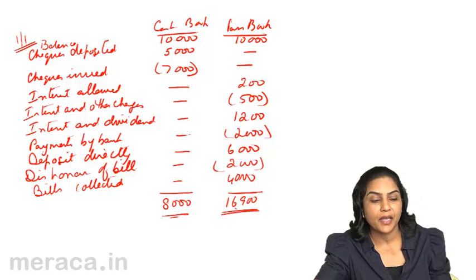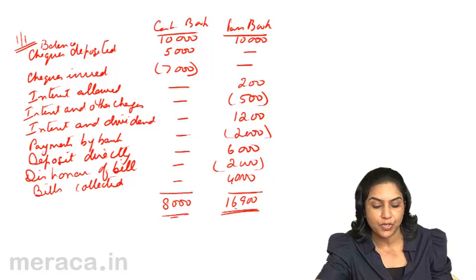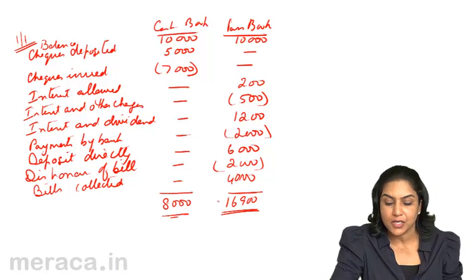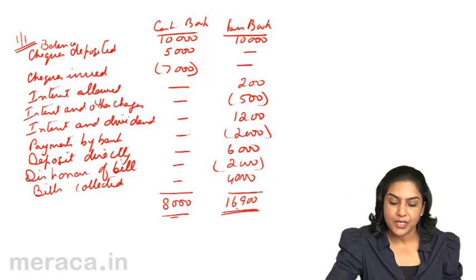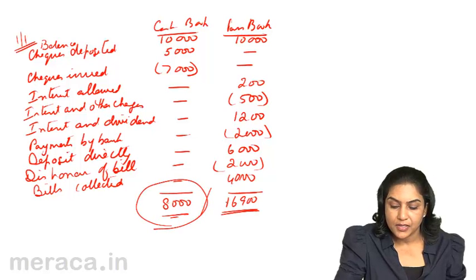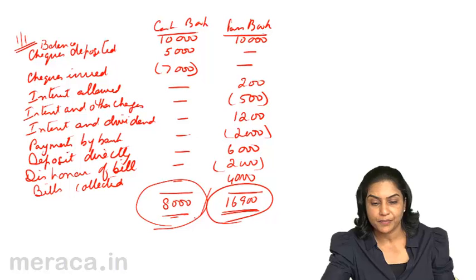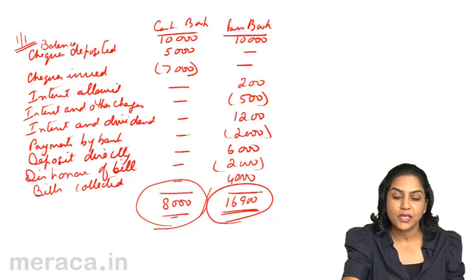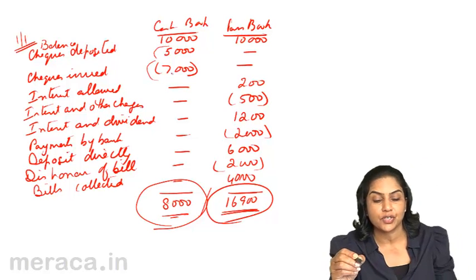At the beginning of the 1st, both the cashbook and the passbook had a balance of 10,000. But by the end of the day, there are two different balances: 8,000 in the cashbook and 16,900 in the passbook. A bank reconciliation statement tries to reconcile the difference between these two balances. The causes of this difference are cheques deposited but not cleared, and cheques issued but not presented.